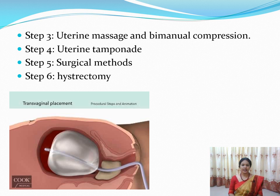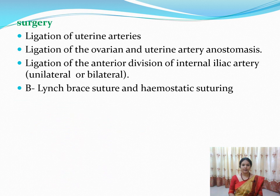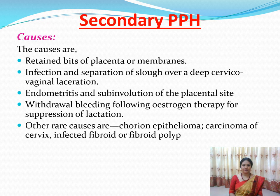Surgical methods for managing true postpartum hemorrhage include hysterectomy (removal of the uterus) if bleeding is severe and uncontrollable. Other surgical options include ligation of the uterine arteries, ligation of the ovarian and uterine artery anastomosis, ligation of the anterior division of the internal iliac artery, B-Lynch brace suture, and hemostatic suturing. These are last-resort measures for controlling hemorrhage.